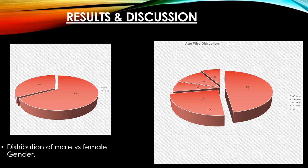This age distribution pie chart shows that most patients were in the age group 31 to 40 years, then 24% were in the 41 to 50 year age group, 8% were in the 51 to 60 year group and also in the 21 to 30 year group, and 12% were in the 61 to 70 year age group.